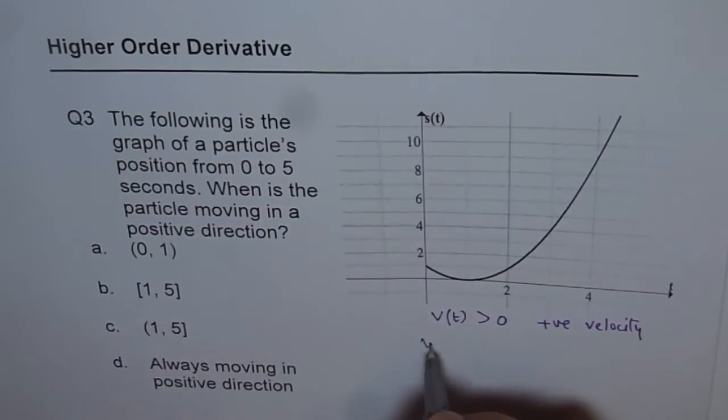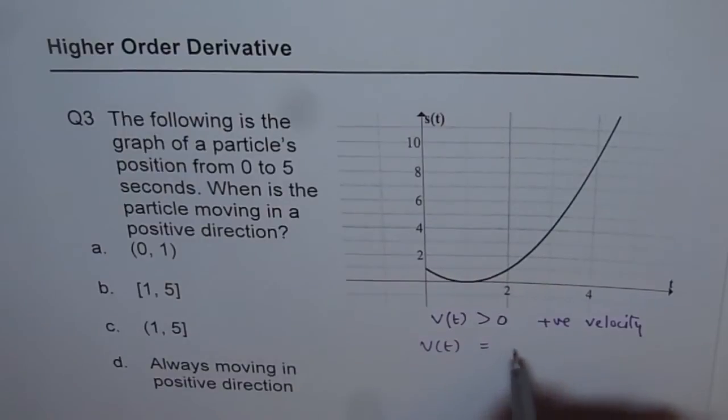Now velocity is actually derivative of position, the displacement. So velocity is actually derivative of position.